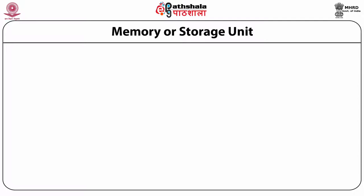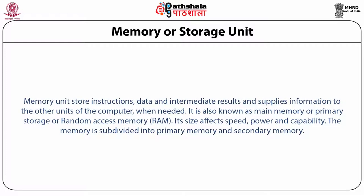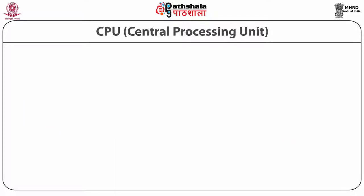Next is the memory or the storage unit. Memory or the storage unit stores all the instructions, data and intermediate results and supplies the information to the other units of the computer as and when needed. It is also known as main memory or primary storage, or more commonly as random access memory or RAM. The size of this memory affects the speed, power and capability of the system as a whole. The memory may be divided into primary memory, which constitutes RAM as well as read-only memory — a built-in memory of the system — and secondary storage.